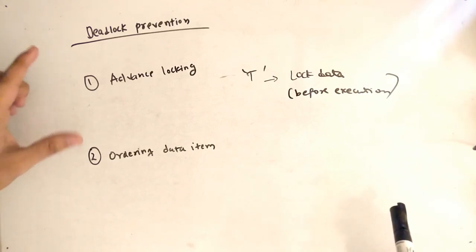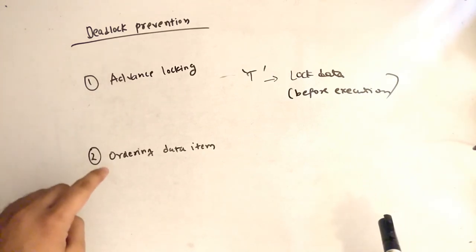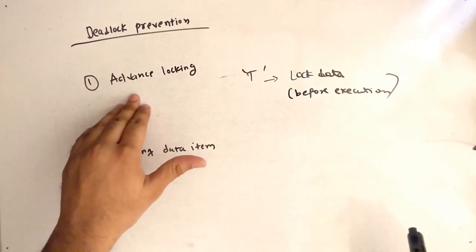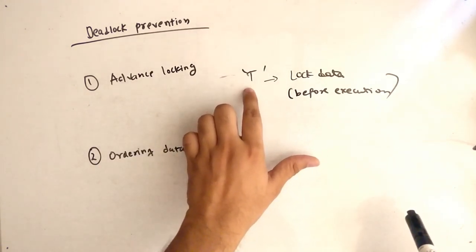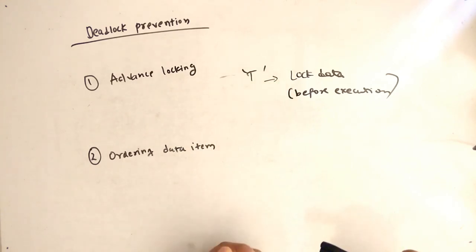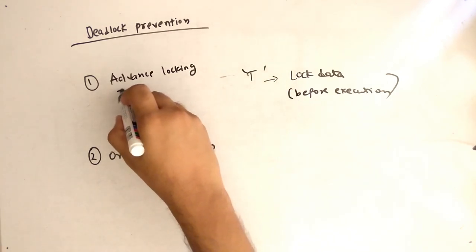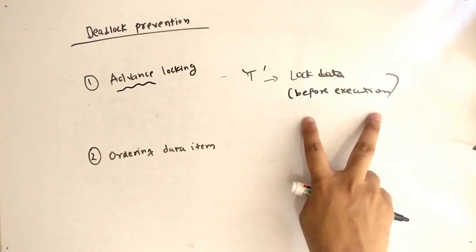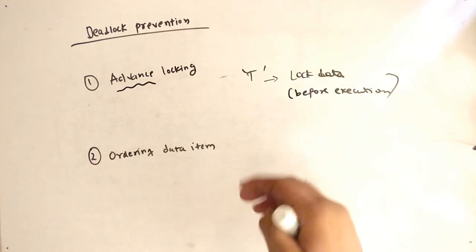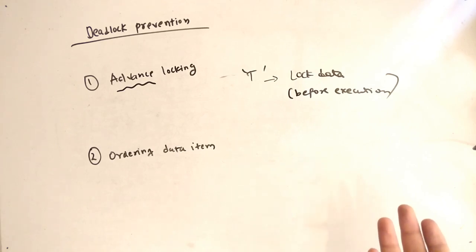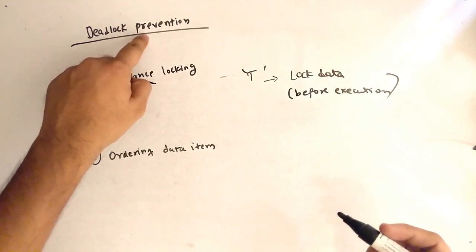Now deadlock prevention, we have two points here: advance locking and ordering data item. Let's talk about advance locking. When we talk about advance locking, this means that transaction should lock data before execution. So before execution we are locking the data items which are required by the transaction. So there will be no deadlock condition in future. So it is the prevention of deadlock.